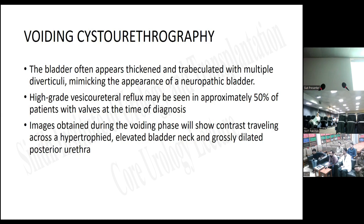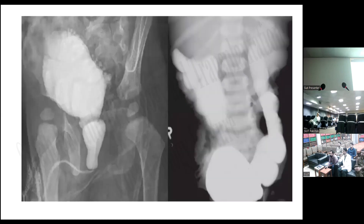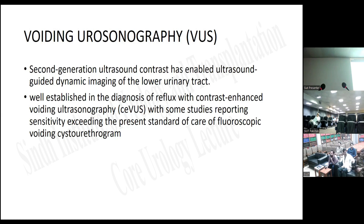On voiding cystourethrography, the bladder appears thickened and trabeculated with multiple diverticula, mimicking the appearance of a neuropathic bladder. High-grade vesicoureteral reflux may be seen in approximately 50% of patients at the time of diagnosis. Images obtained during the voiding phase will show contrast traveling across a hypertrophic elevated bladder neck and grossly dilated posterior urethra. Contrast-enhanced voiding urosonography has also enabled ultrasound-guided dynamic imaging of the lower urinary tract, with some studies reporting sensitivity exceeding fluoroscopic VCUG.